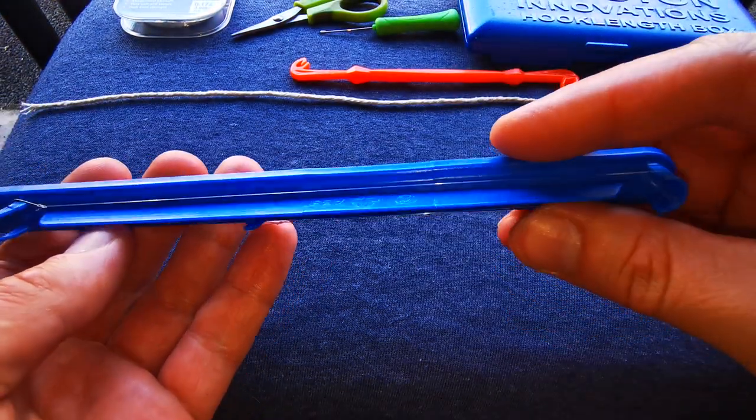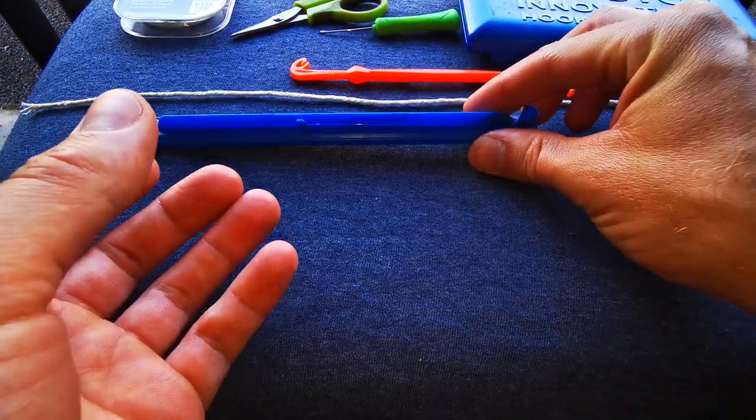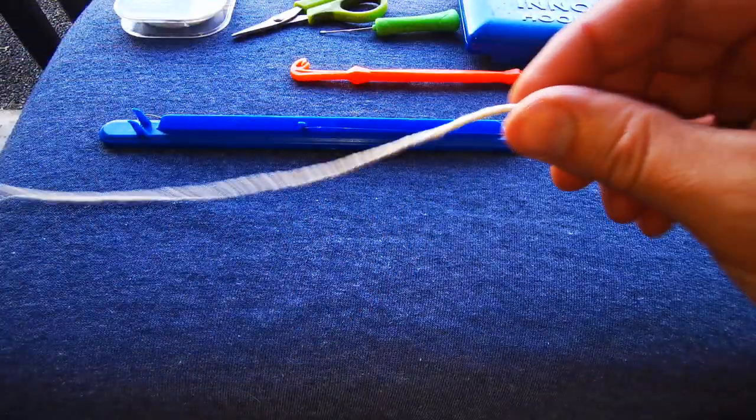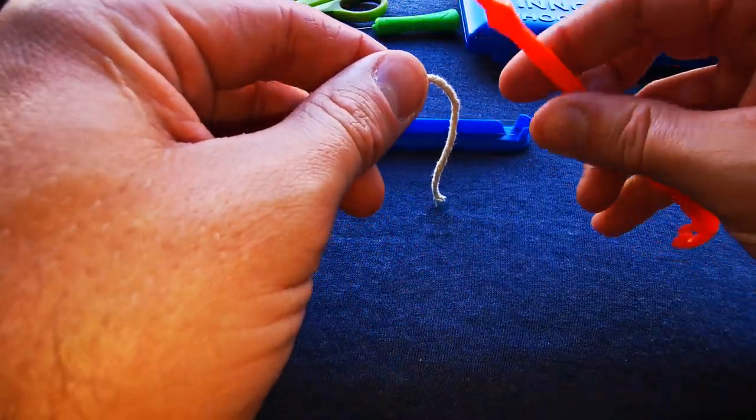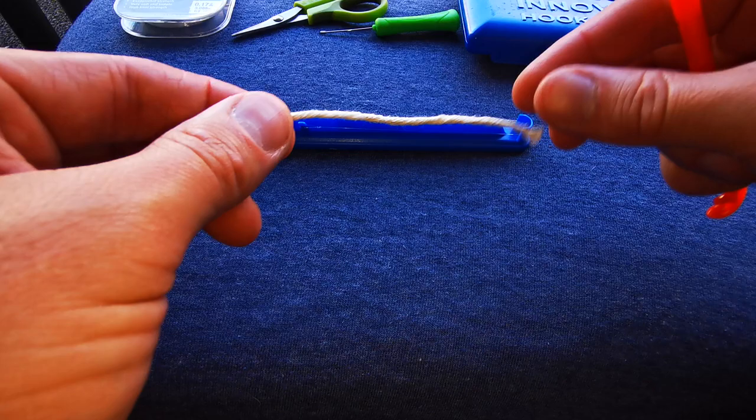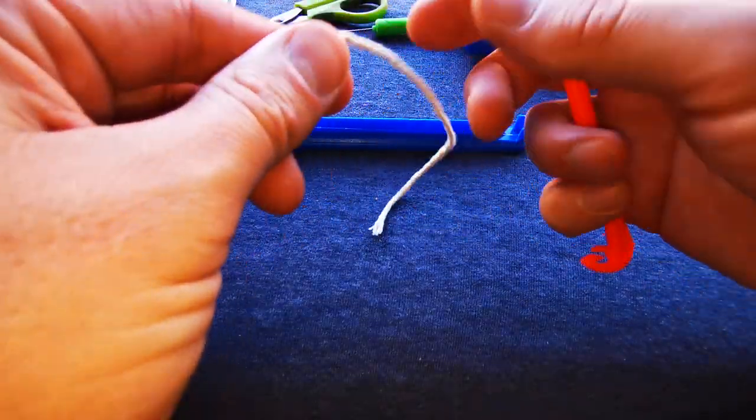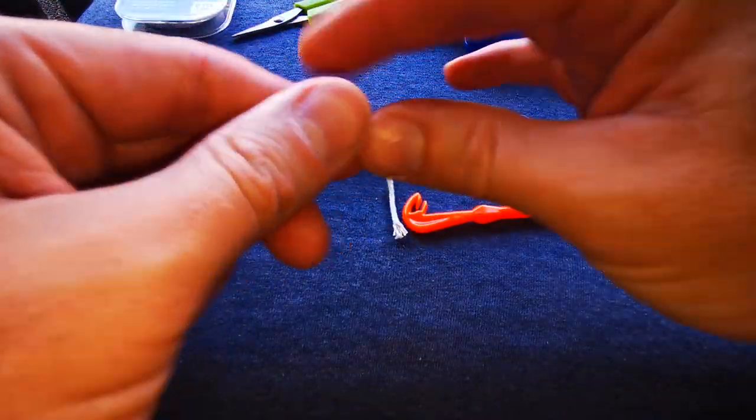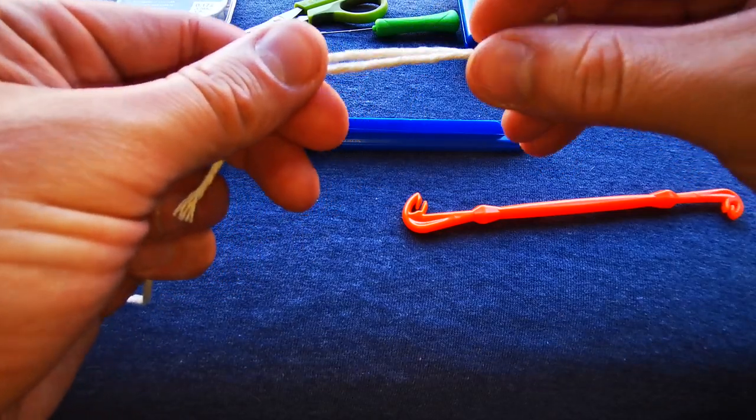Now what I'm going to do as well, just because obviously it's hard to see the line on the video, I'm going to show you how the loop tire works with a bit of string so it's easier to see. So obviously you'd be holding your hook length at the correct size once you've gone around your pegs.